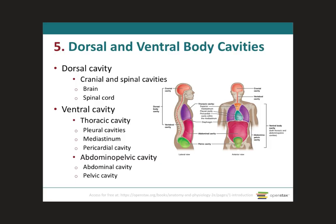There are two main types of body cavities. We have the ones located dorsally, in the posterior compartment as you can see here — the cranial cavity and the vertebral cavity. Then we have the other group, which are part of the ventral cavity, located anteriorly or ventrally.